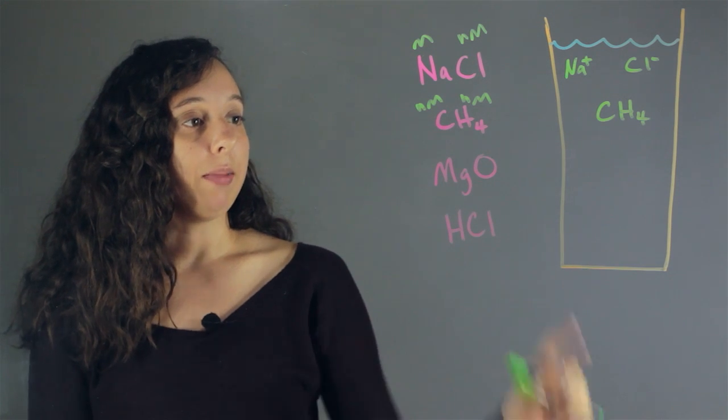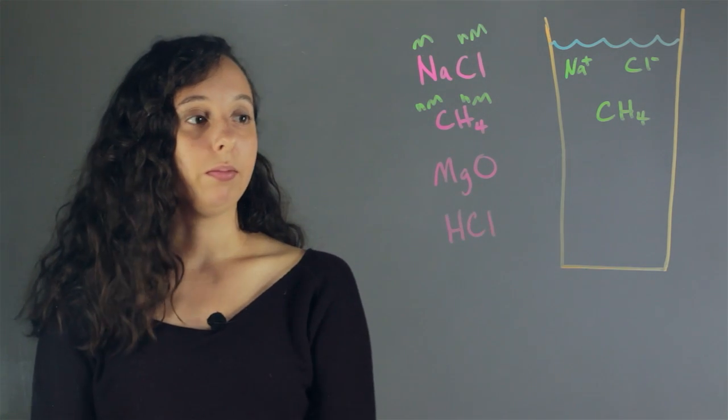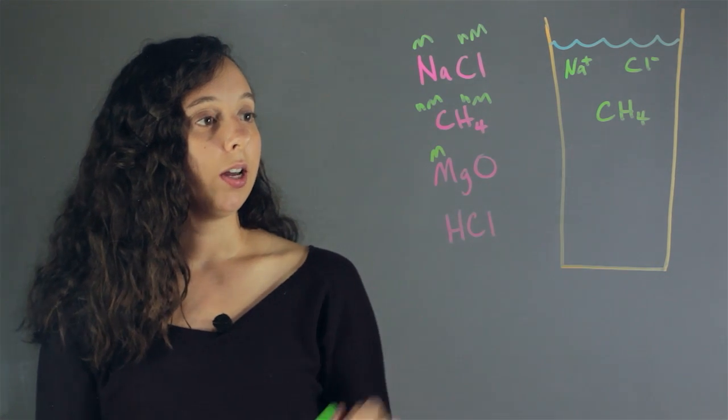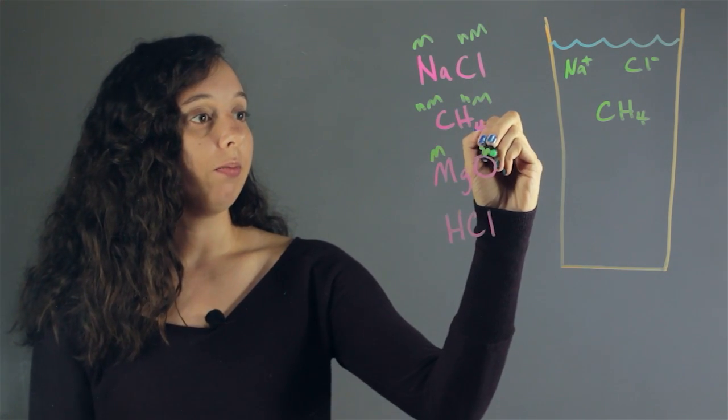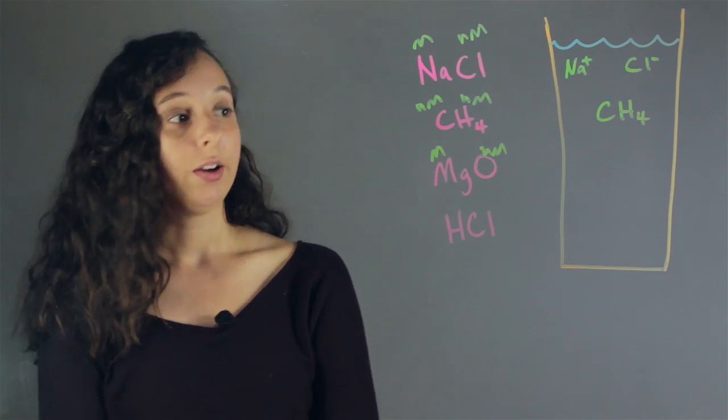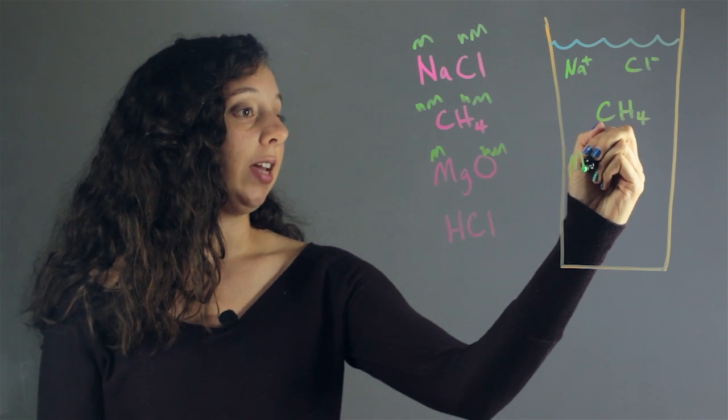Next, let's look at magnesium oxide. Well, magnesium is a metal, it's in row two, and oxygen is a non-metal. So this definitely has a chance of being ionic, it is, and when you put it into solution, it'll dissociate.